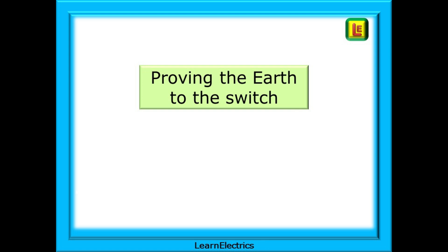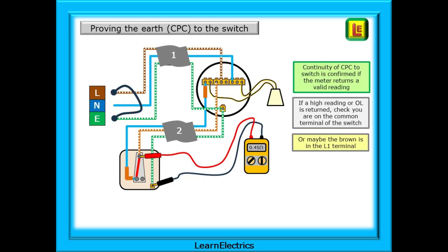We now need to prove the continuity of the earth cable or CPC that goes from the ceiling rows to the light switch. Even if this wire is unused it may be used in the future and we need to know that it's connected. To do this test we must carry out the test at the light switch. On low ohms, test between the common terminal of the switch to the earth terminal in the switch. Continuity of CPC to the switch is confirmed if the meter returns a valid low ohms reading.